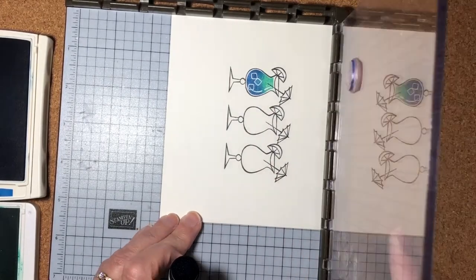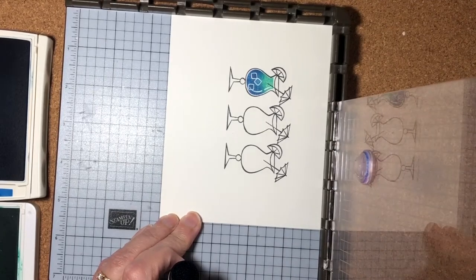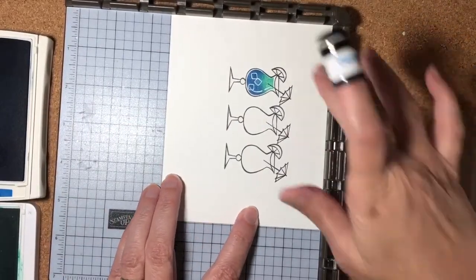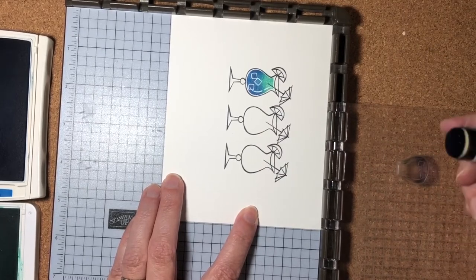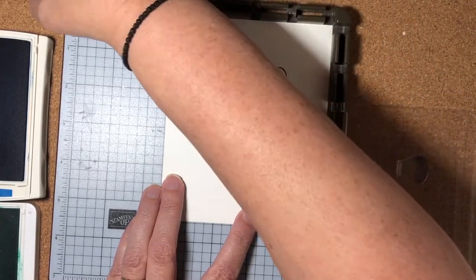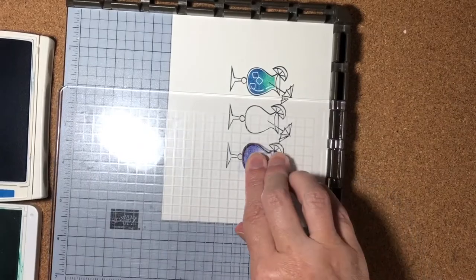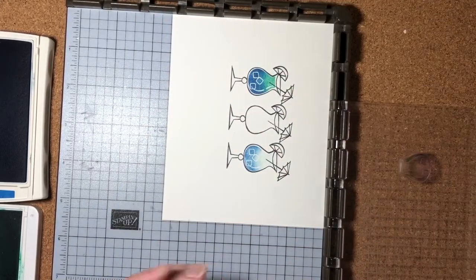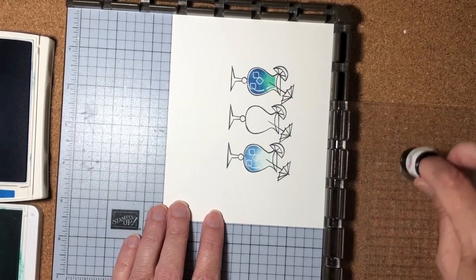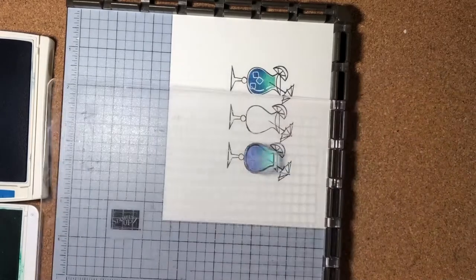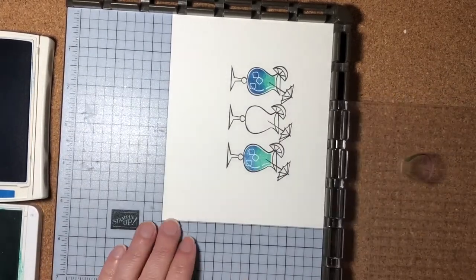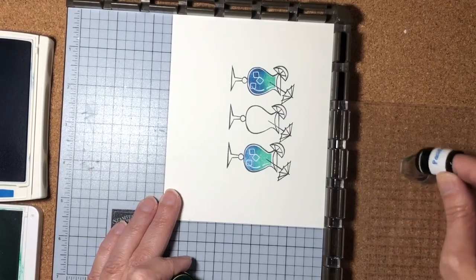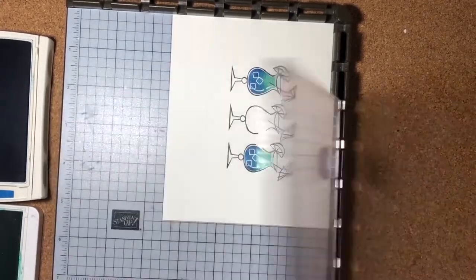Now I want to go ahead and do the same thing on the third glass, so I can ink up. I'm going to make sure my paper's in the corner so everything is all lined up perfectly. I'll get the Pacific Point and stamp this down. And then I'll get the Coastal Cabana and ink up the top of the drink. And again, I think I want to darken up the blue a little bit on the bottom. There we go. I like that.